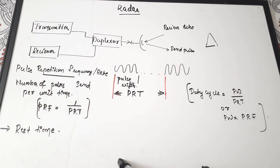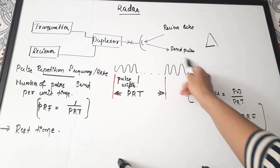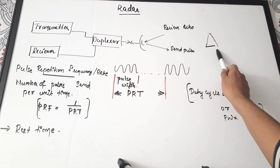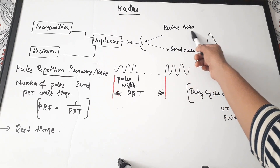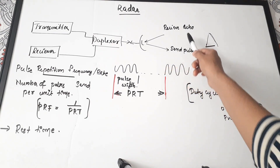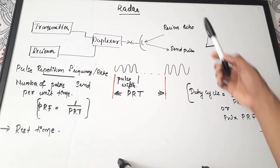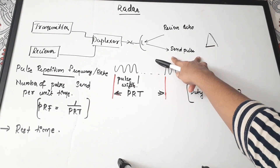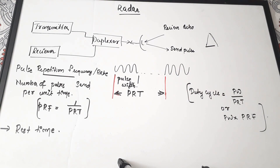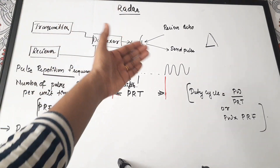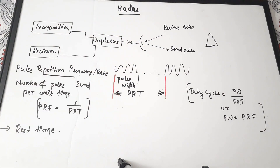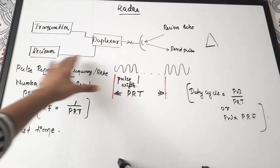The principle used in radar is sound wave reflection. The radar sends some pulses which hit the target, and the target returns an echo. The radar receives this echo, and the time difference between the sent pulse and the received echo is calculated to find the distance of the target — that is how far the target is located.